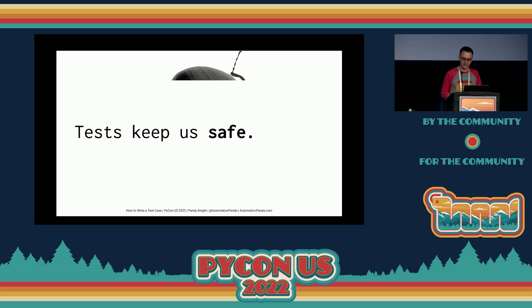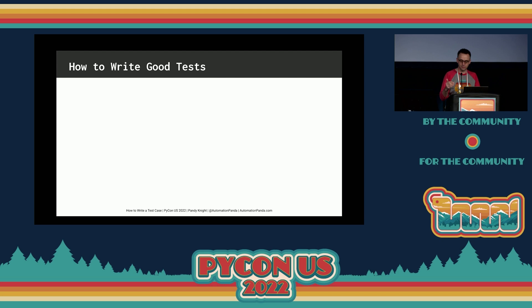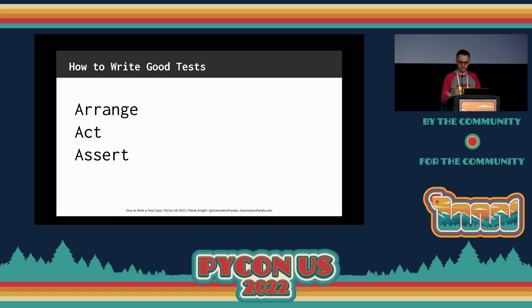The last thing we want to deploy are big old bugs. So if we intend to spend time writing tests, how can we write good tests? There's a simple but powerful pattern I like to follow: Arrange. Act. Assert. Arrange, Act, Assert is a great way to structure your test cases. It prescribes an order of operations.